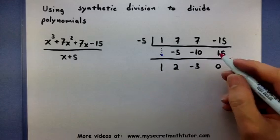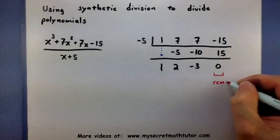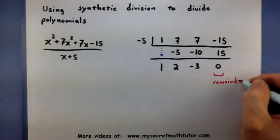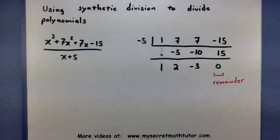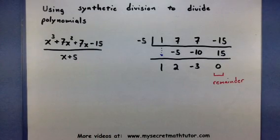Now, this last number that shows up here, this is basically your remainder. And notice how in this one, I actually got a 0. It means that I don't have a remainder. That when I divided these two polynomials, it went in evenly.